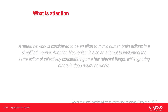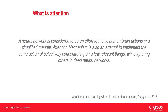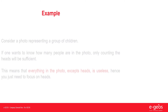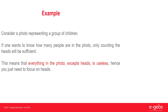What is attention? A neural network is considered to be an effort to mimic human brain actions in a simplified manner. The attention mechanism is also an attempt to implement the same action of selectively concentrating on a few relevant things while ignoring others in deep neural networks. Consider a photo representing a group of children: if one wants to know how many people are in the photo, only counting the heads will be sufficient. This means that everything in the photo except heads is useless — you just need to focus on heads.